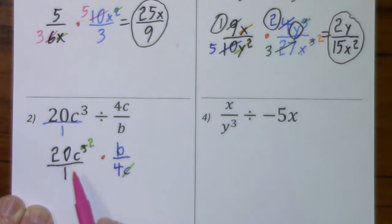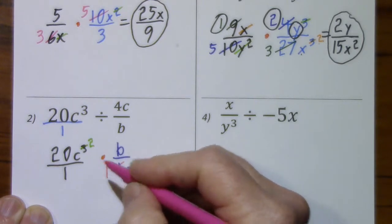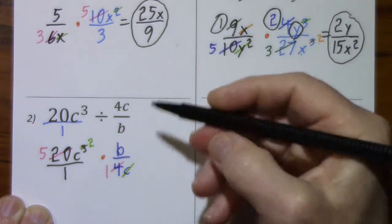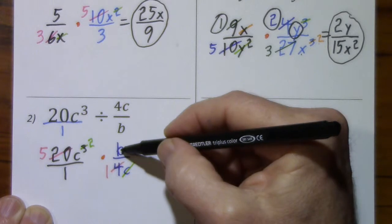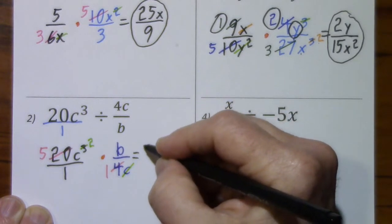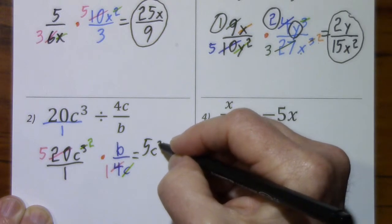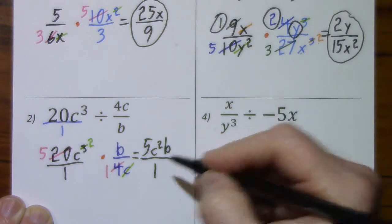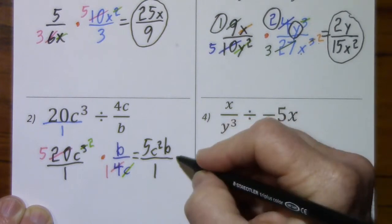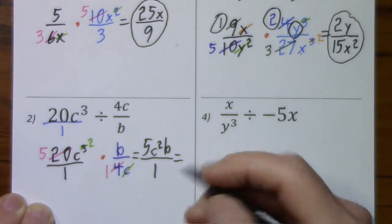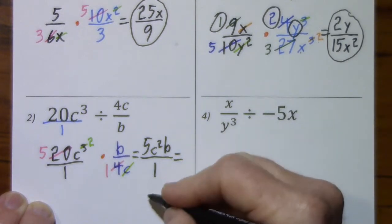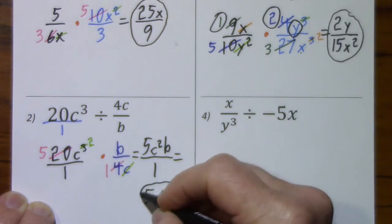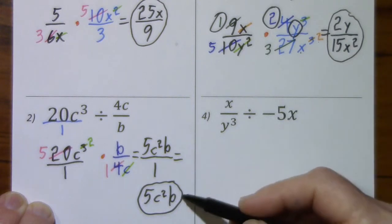We have a common factor of 4: divide by 4, divide by 4. We can't reduce any more, so it's 5c squared b in the numerator. In the denominator it's simply 1, so this isn't considered simplified — you have to write this as 5c squared b. That's our answer.